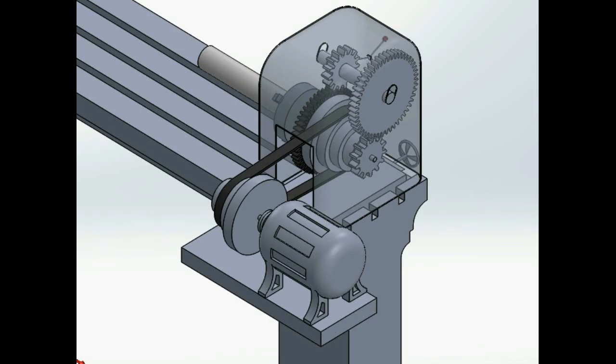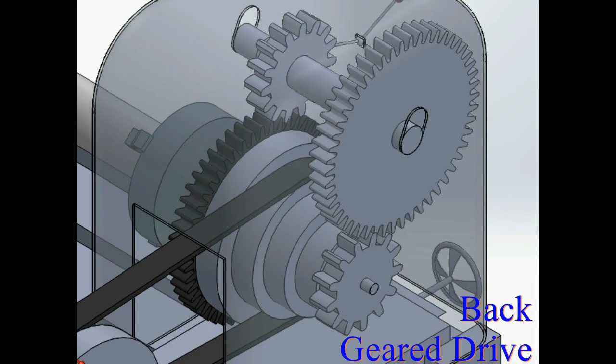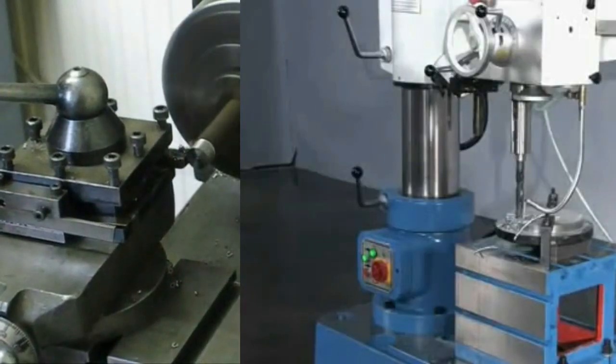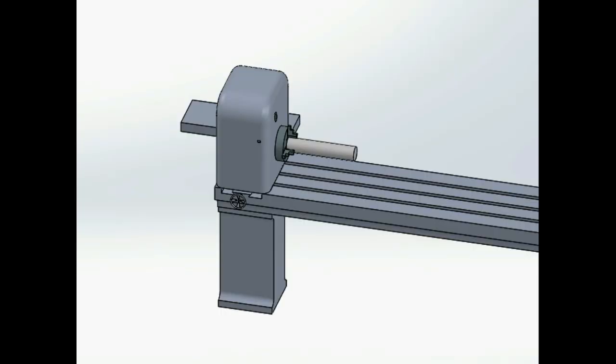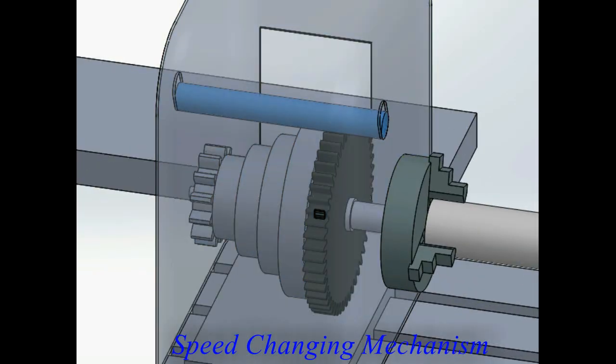In this video we are going to discuss the cone pulley drive and the back gear drive and see them working. These are commonly found in lathe headstocks and drilling machines. The headstock houses a spindle connected via a speed changing mechanism to an electric motor.